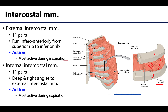One more muscle layer is visible here — the deepest, or innermost, intercostal. It is very similar to the internal intercostal; this illustration makes the fibers appear a bit too vertical, but it is essentially the deeper part of the internal intercostals. It is separated from the internal intercostals only by the intercostal neurovasculature, which runs between the innermost and the internal intercostal layers.